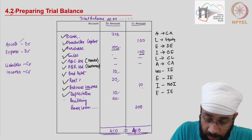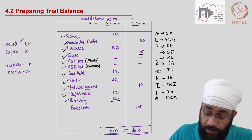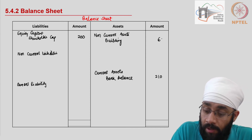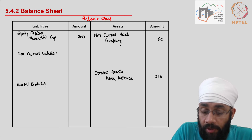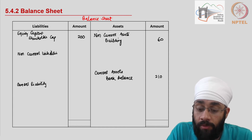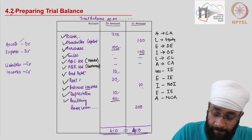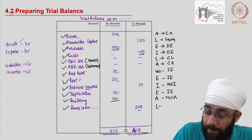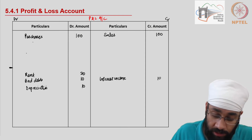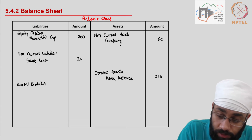Building is an asset and a non-current asset, so 60 goes to the balance sheet under non-current assets. Note that even within non-current assets you can have the categorization of tangible and intangible assets for more granularity, but this is sufficient for now. Then there is a bank loan of 200, which is a liability and a non-current liability, so bank loan of 200 is written under non-current liabilities on the balance sheet.